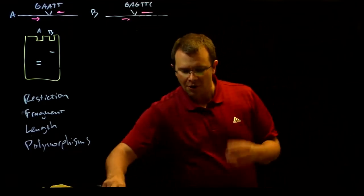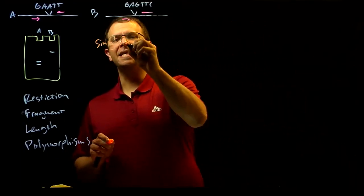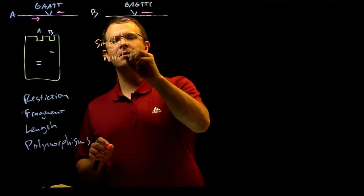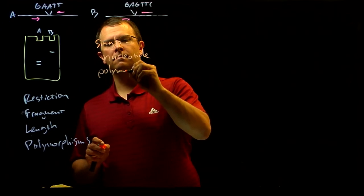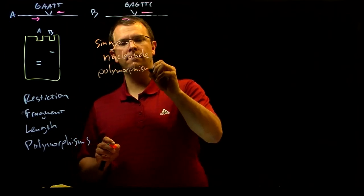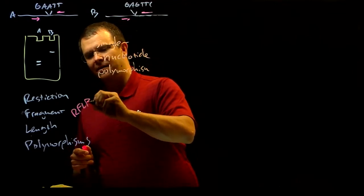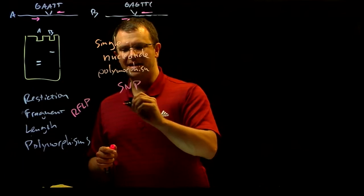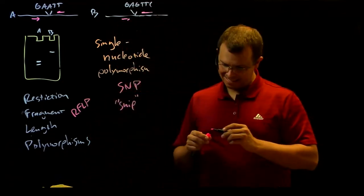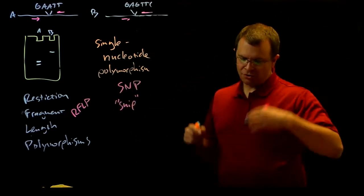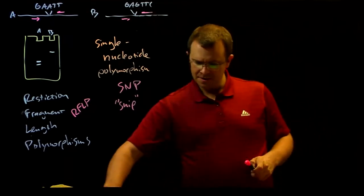of a much larger class of DNA marker called a single nucleotide polymorphism. And just as we abbreviate this RFLP, we abbreviate this SNP, but we also pronounce this one snip. And again, SNPs are just places where a single base differs between individuals.